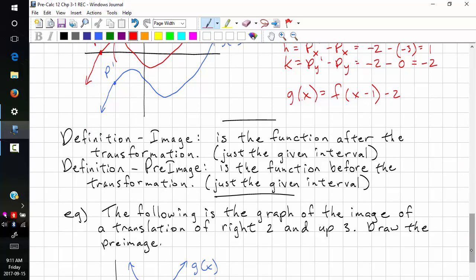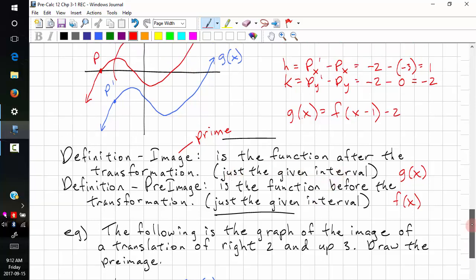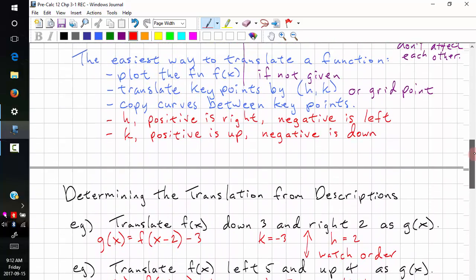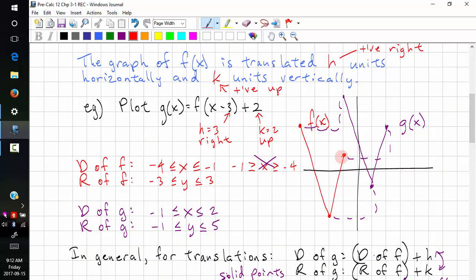Here's some definitions that will help you. The image is the function after the transformation. So this would be our g of x, and this is also our prime coordinates. The preimage is the function before the transformation, so f of x. And it's just for the interval given. So here we have the whole domain. So the image and preimage are for the whole domain. Back on this one, we had a limited interval. So this is the preimage, and this is the image.